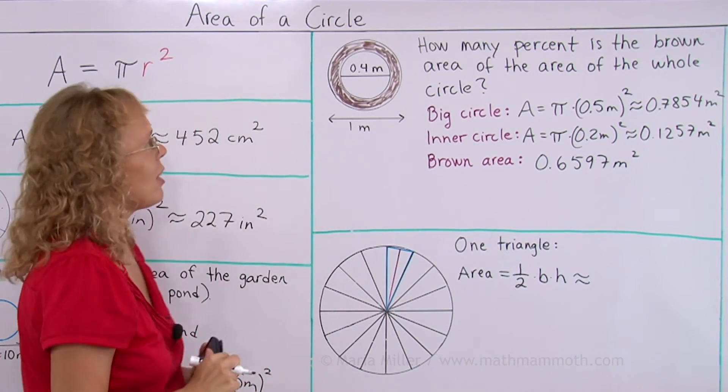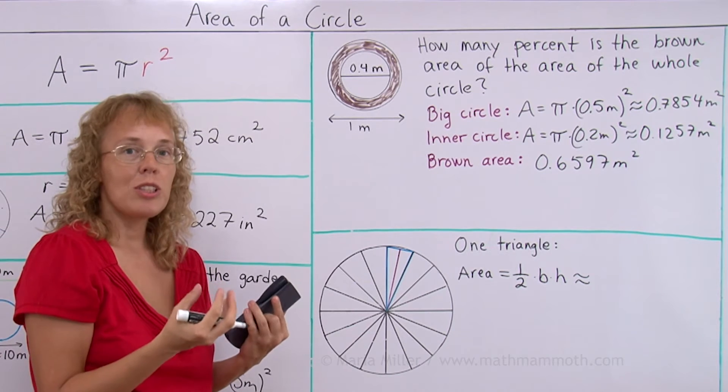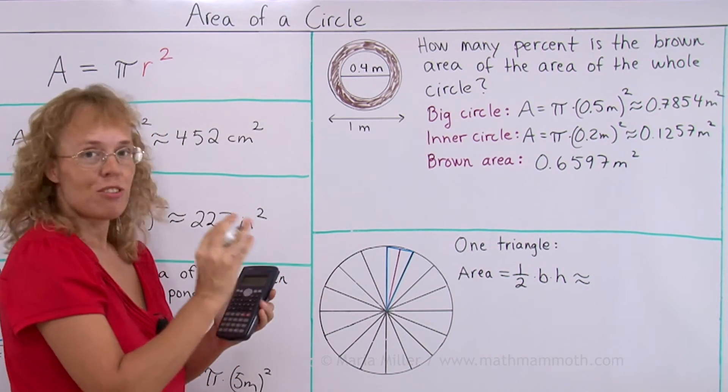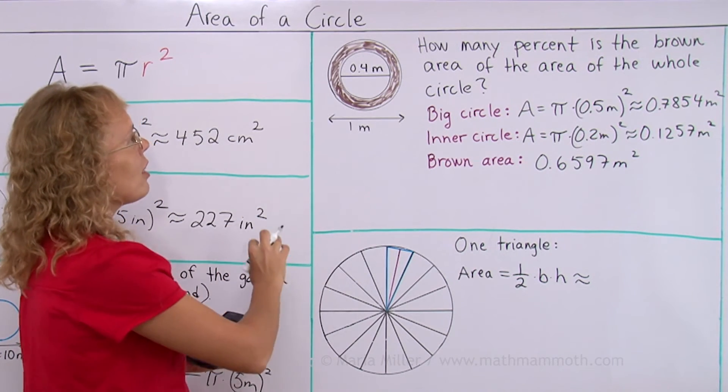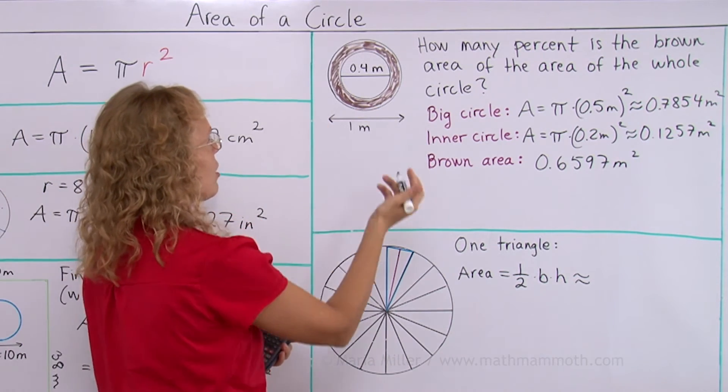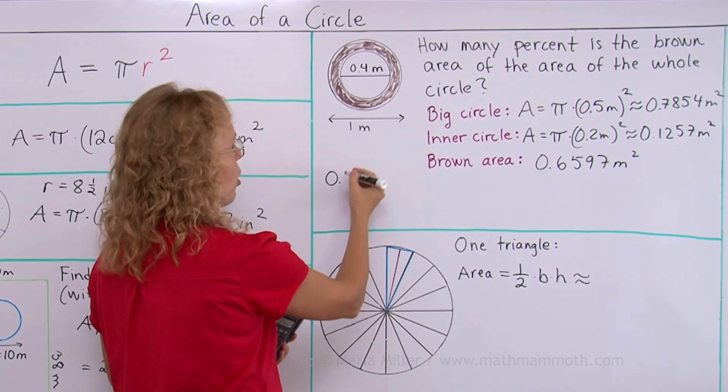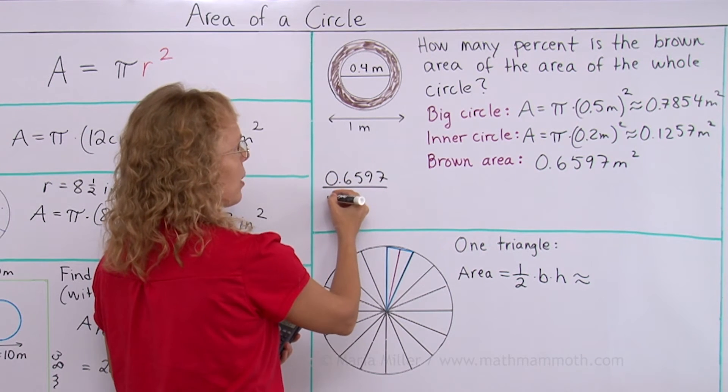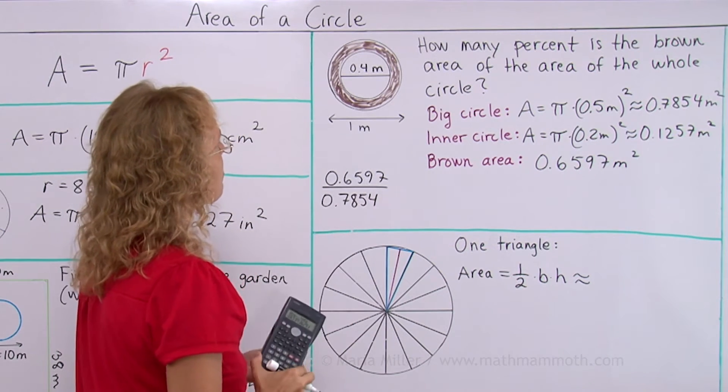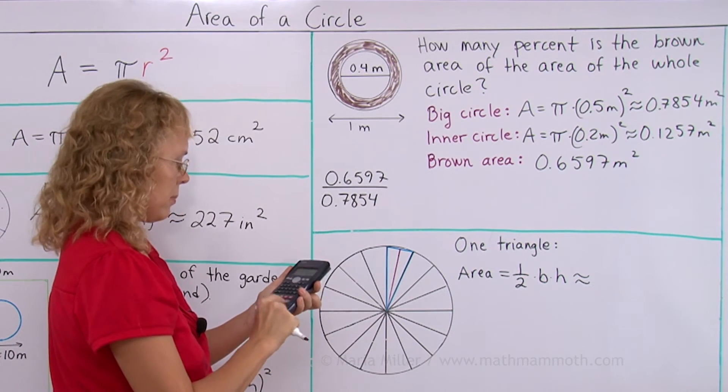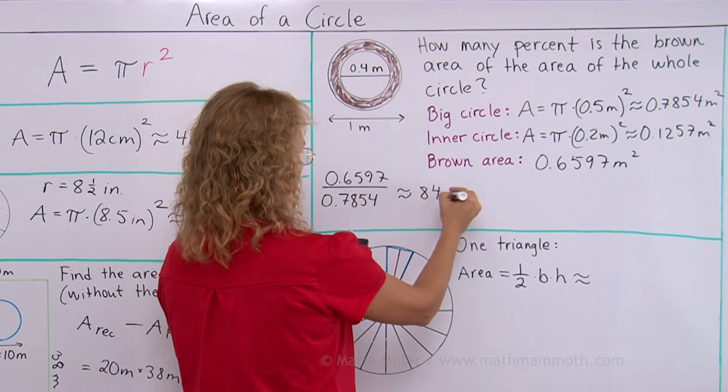And now the percentage. How do we find how many percent is something of something else? When it is a percent question, you need to form the fraction first. And then you change the fraction into a decimal and into a percent. So just think of it as, what part is the brown area of the whole circle? What fraction is the brown area of the area of the whole circle? So the fraction is simply, of course, the brown area divided by the whole circle's area. This divided by the area of the whole circle.